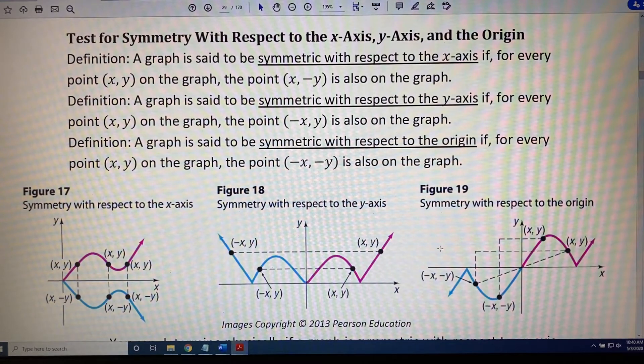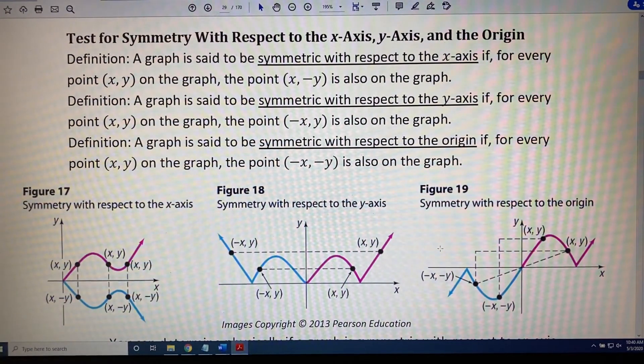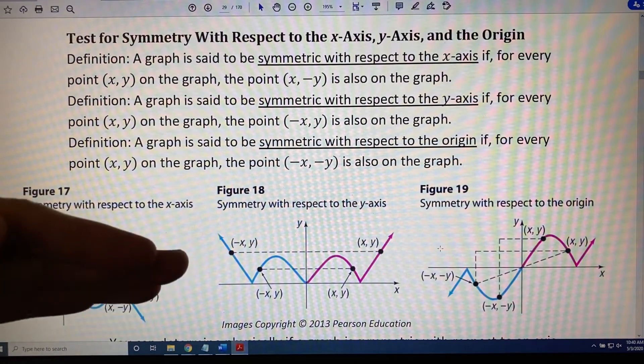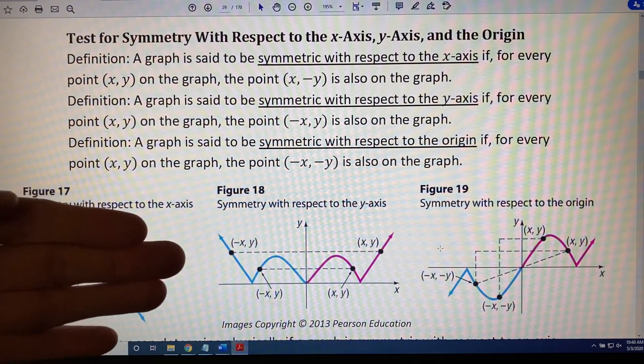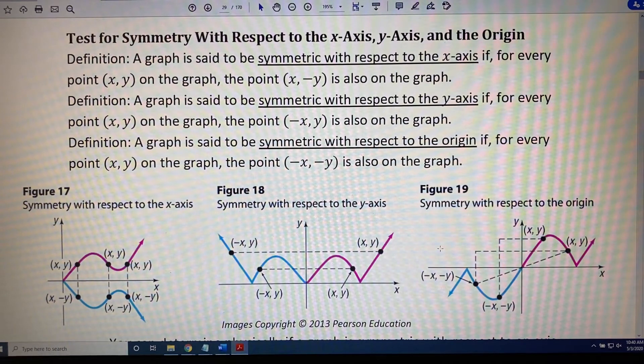For example, graphs that have x-axis symmetry have the property that when you take the graph and you rotate it around the x-axis, the picture that you get before and after is the same. We'll illustrate this in the next video.